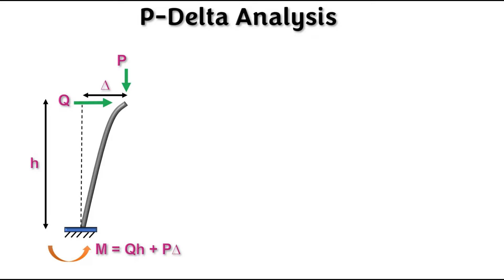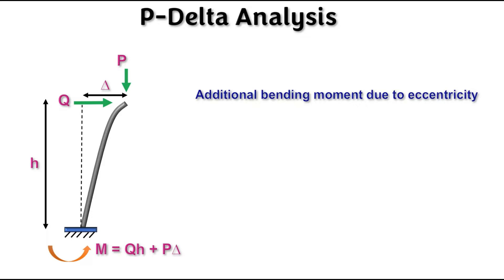When the structure is subjected to lateral load, it deflects laterally and experiences additional bending moment due to the axial load acting on the laterally deformed shape. This creates additional bending moment due to the eccentricity between the applied axial load and the lateral deformation of the structure. You have to understand clearly that due to this eccentricity we get additional bending moment, and this additional bending moment leads to further deformation and redistribution of internal forces.